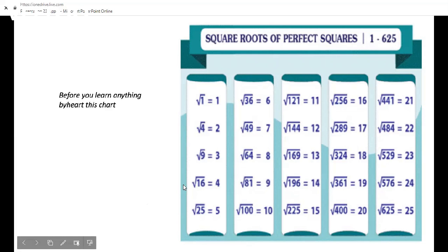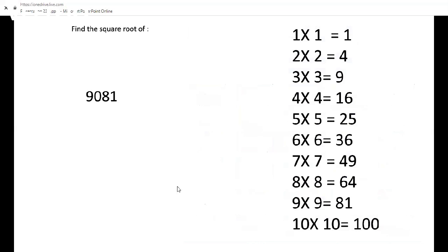Find the square root of 9081. How to find this very fast? You may think, 'Should I search in Google?' No, no need to search in Google. I am given a table over here which is doing square root: 1×1=1, 2×2=4, 3×3=9, and so on up to 10×10=100. How to find the square root of 9081 with the help of this table?